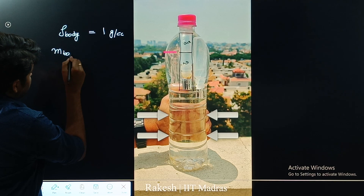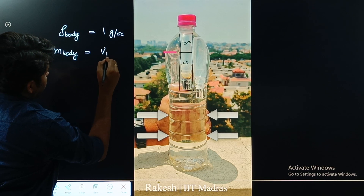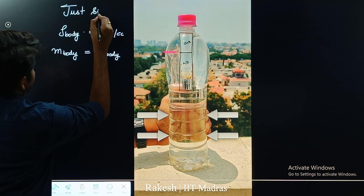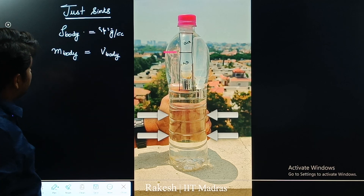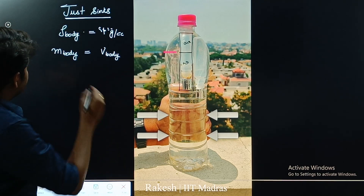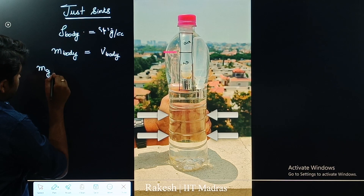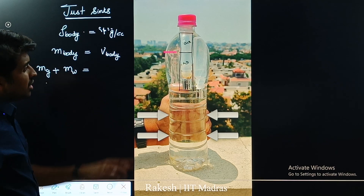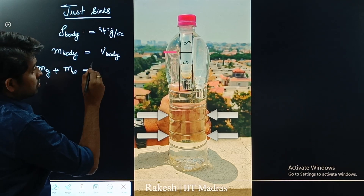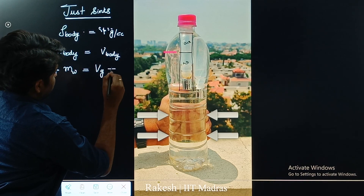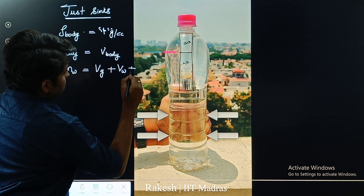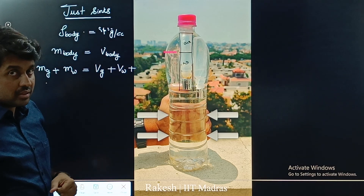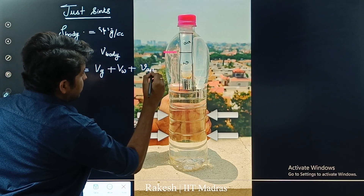So the condition is: mass of the body equals volume of the body (since density of water = 1 g/cc). The mass includes the glass plus the water inside — we take the mass of air as negligible. The volume includes glass, water, and air. The volume of air when it just sinks is V0 minus ΔV as given in the question.